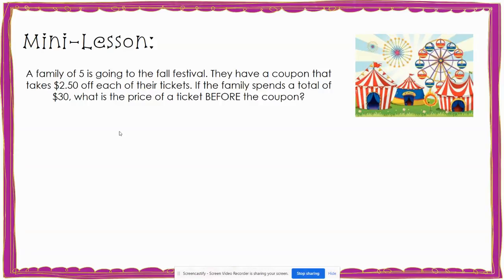Now let's look at our second problem. A family of five is going to the fall festival. They have a coupon that takes $2.50 off each of their tickets. If the family spends a total of $30, what is the price of a ticket before the coupon? In this problem, I can see that there are five tickets being purchased, each with $2.50 taken off, and the family spent a total of $30. Let's figure out how to make an equation and a tape diagram from this information.